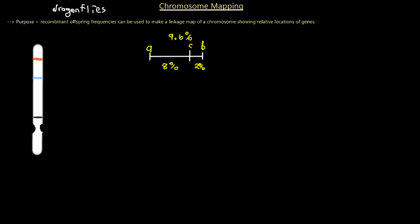His concept states that to map out genes, the first thing you do is look at recombinant offspring frequencies. You have a male and female parent reproduce and form different offspring, and those offspring will have various gene frequencies. You pick genes A, B, and C and observe their recombination frequencies. We've determined that A and C recombine 8% of the time, A and B recombine 9.6% of the time, and C and B recombine 2% of the time. The further the distance between genes, the higher the recombination frequency number.